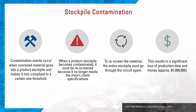Contamination events occur when oversized material goes into a product stockpile and makes it non-compliant to a certain size threshold. When a product stockpile becomes contaminated, it must be rescreened because it no longer meets the mine client specifications. To rescreen the material, the entire stockpile must go through the circuit again. This results in a significant loss of production time and money — each contamination event costs roughly $1 million.